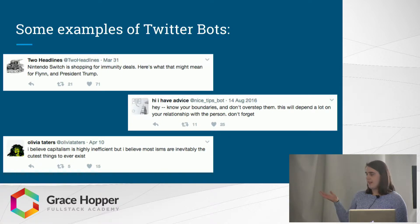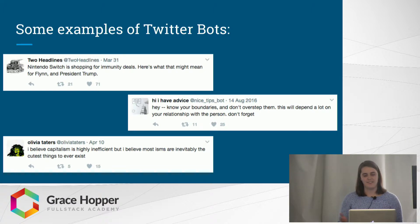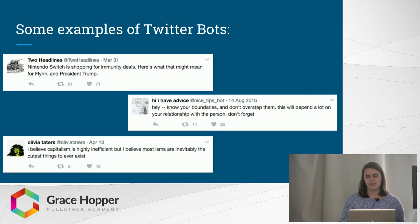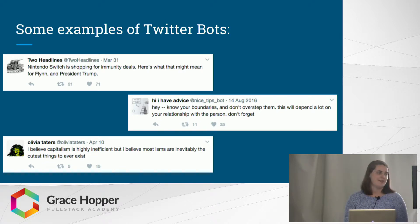For this Two Headlines bot, it is matching up two separate headlines from the news and tweeting them out. This WikiHow bot pulls text from WikiHow advice and gives us some advice. And then this Olivia Taters bot matches up searches that users make with adverbs like literally, obviously, or inevitably. It takes these different clauses and pushes them together with the adverb hinges. The point is that Olivia Taters is supposed to be a teenage girl just letting her thoughts enter the world of Twitter.